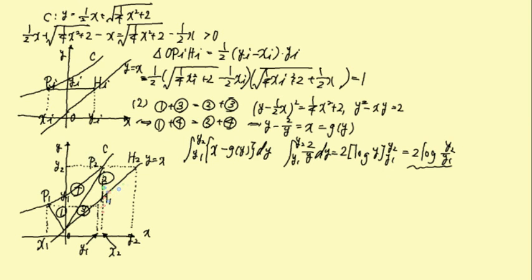X2、Y2と、OP1P2のこの一部の断片とここの直線と、あとこの部分の直線で囲む部分、これを②番というふうに考えてやった場合、